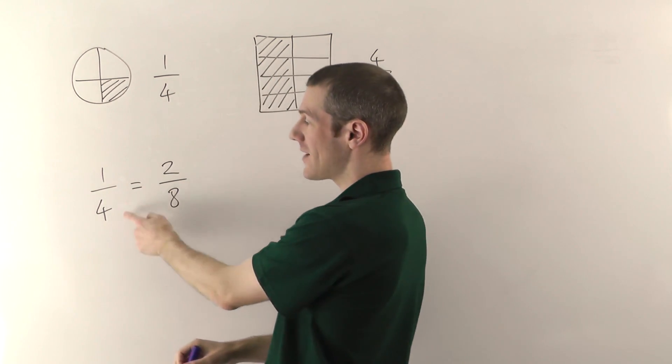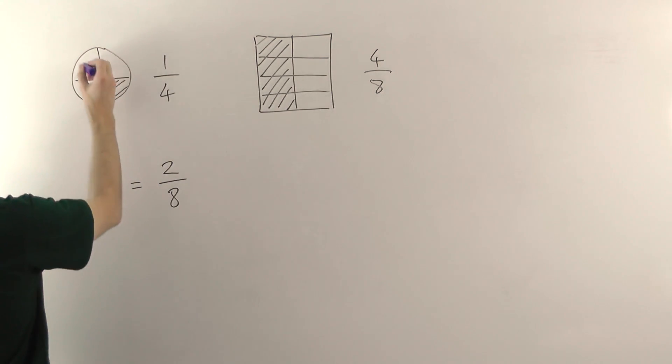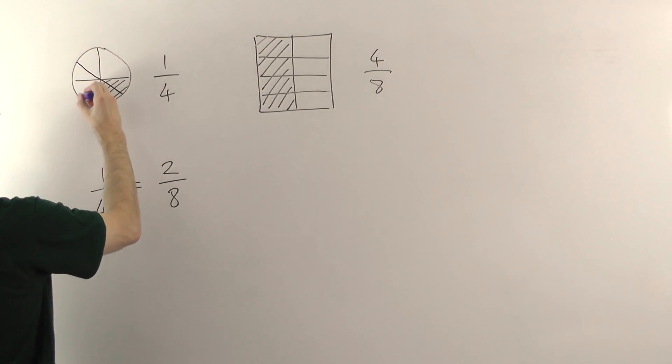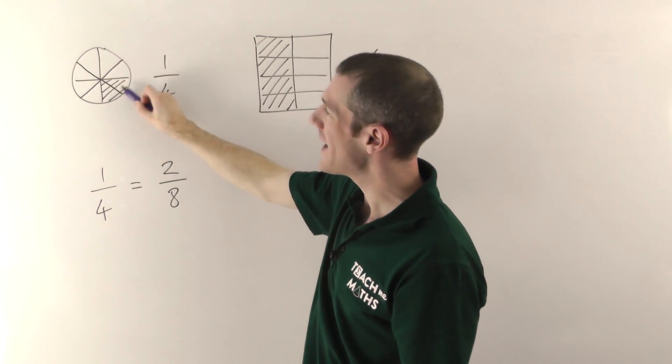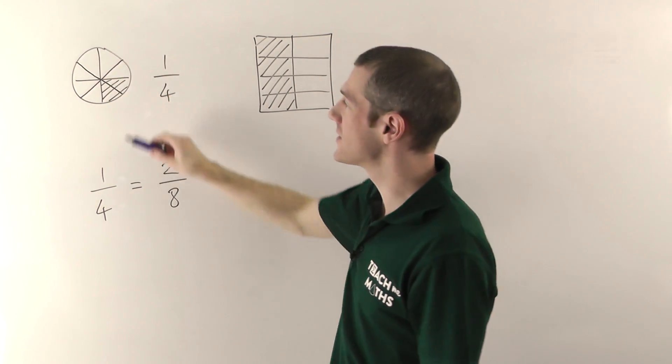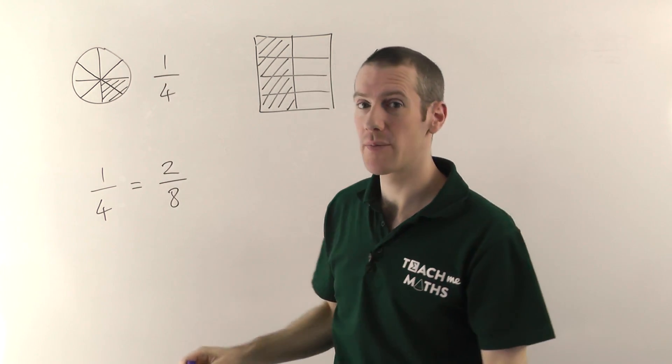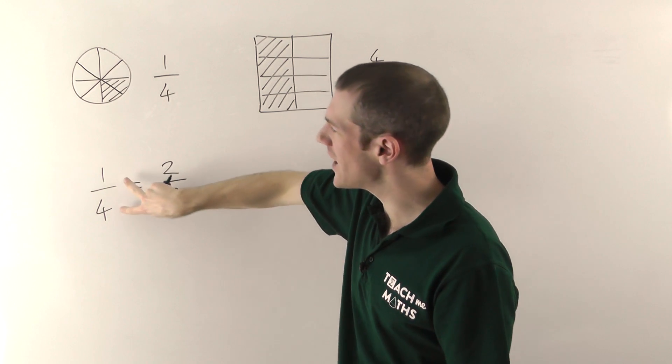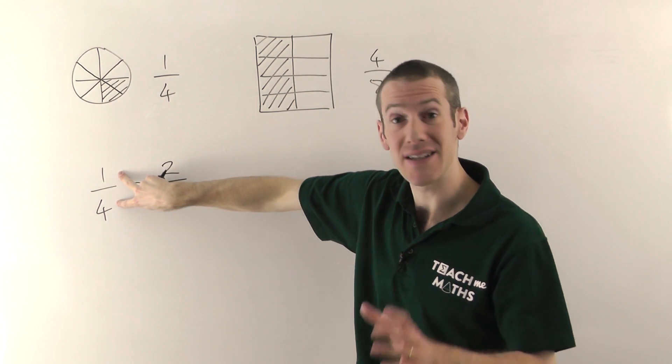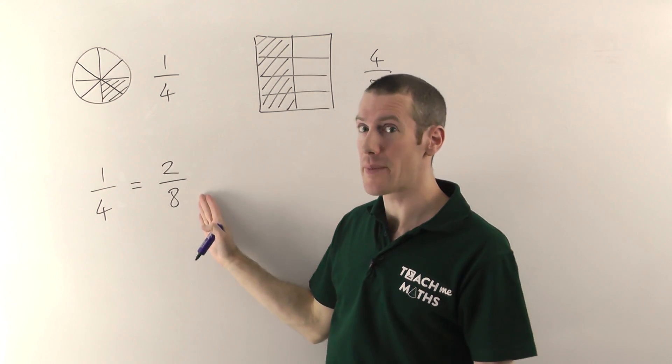Now this is the same amount of stuff as this. If I just divide this pizza up into eight slices rather than four, hopefully you can see that. Now we've got eight slices, but I haven't changed the amount of pizza I've got, but now I've got two-eighths instead of the one-quarter that we had before. But these are exactly the same fraction, and it turns out, if you times the top and bottom of any fraction by the same number, the fraction doesn't change. You still have the same amount of stuff.